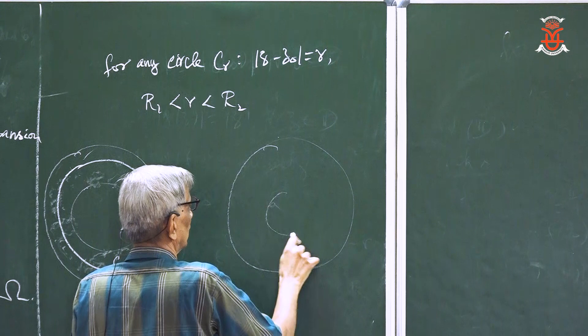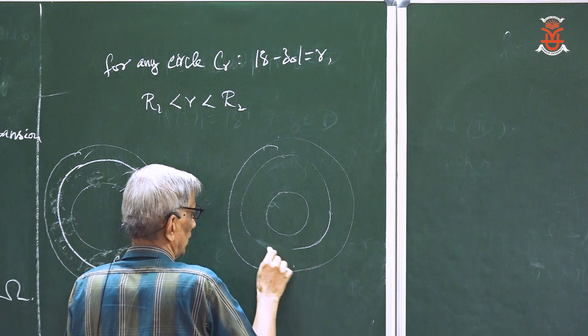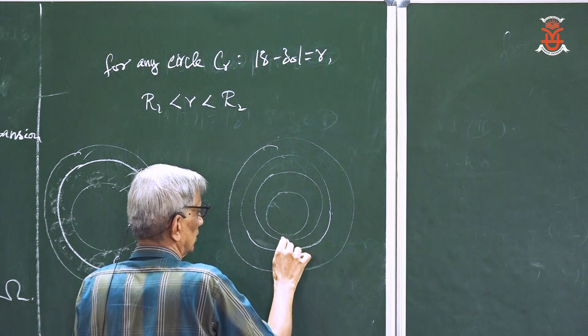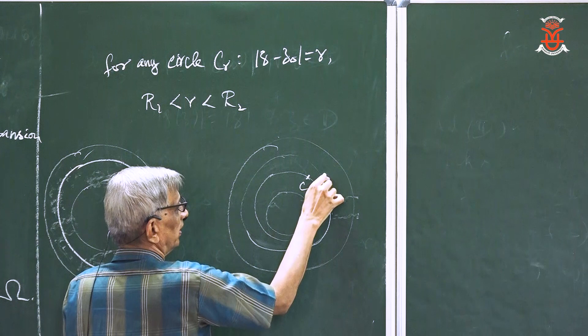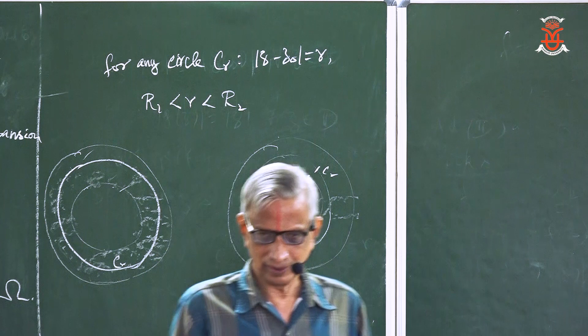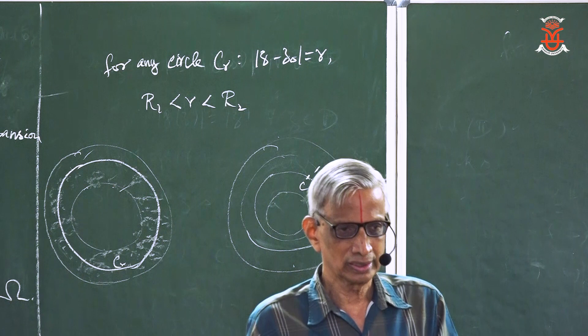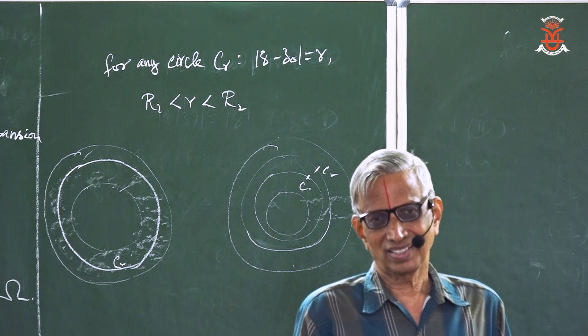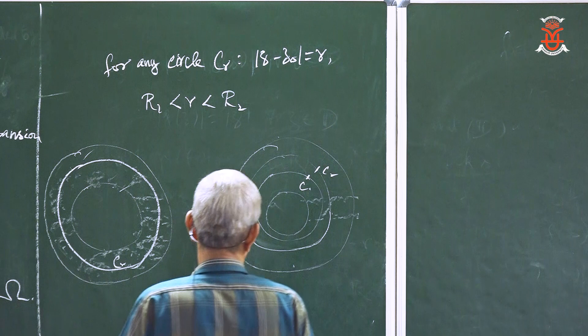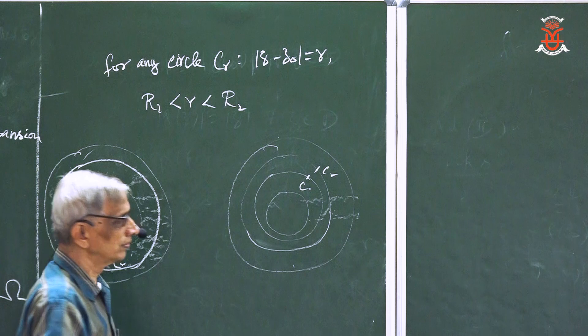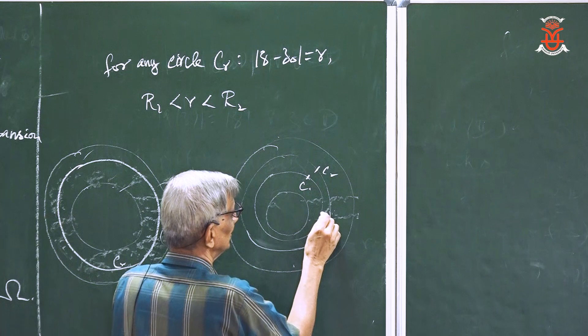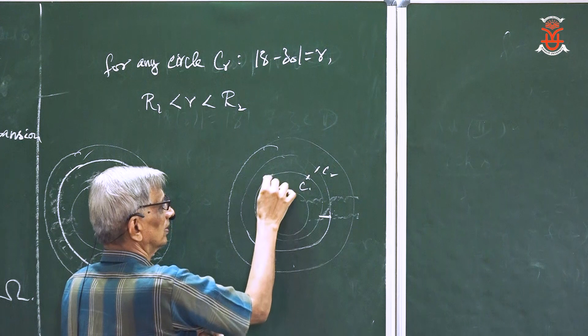Cauchy's theorem for an annulus says: take two circles C₁ and C₂ both lying in the annulus. Connect them with a cut, go along one circle, traverse a line segment to the other circle, complete that circle, and come back. The line segment contributions cancel, so the integral on C₁ equals the integral on C₂.